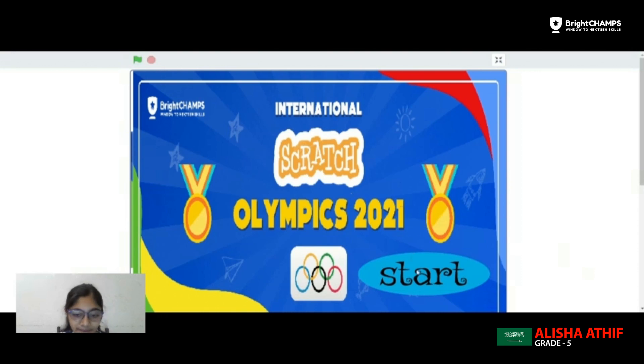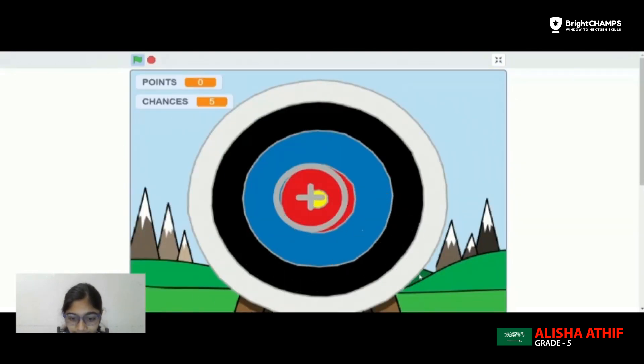So the Olympics banner will show up. Click the start button. Press the spacebar key to release the target and then the arrow to the target. You will get 5 chances. The bullseye.